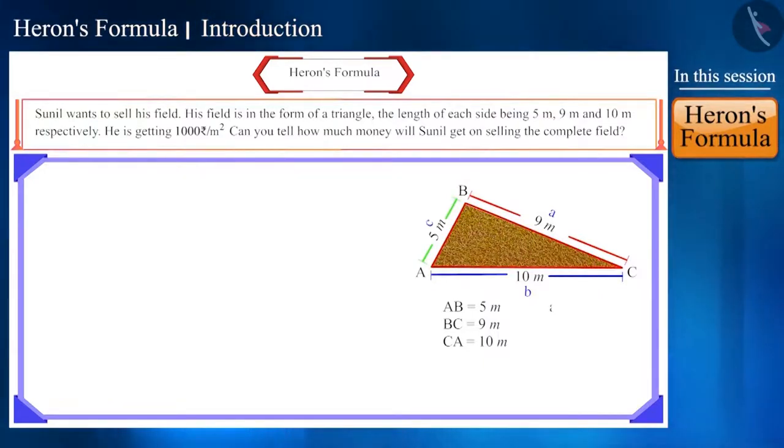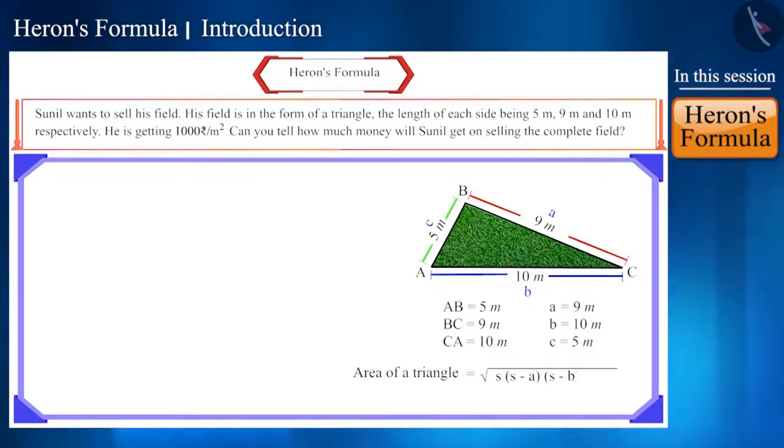So in triangle ABC, a equals 9 meter, b equals 10 meter and c equals 5 meter. Heron's formula for calculating the area of a triangle is square root s and within brackets s minus a, s minus b, s minus c, and its solution will be as follows.